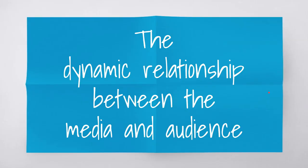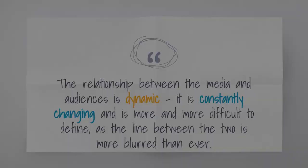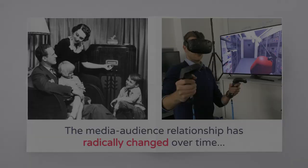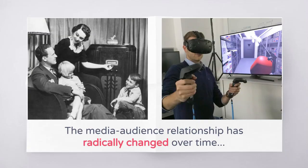So let's dive into this idea of the dynamic relationship between the media and audience. The relationship between the media and audiences is what we consider dynamic — that word is important. Dynamic just means it is constantly changing, in a constant state of flux or flow, and it's more and more difficult to define these days as the line between media and audience is more blurred than ever.